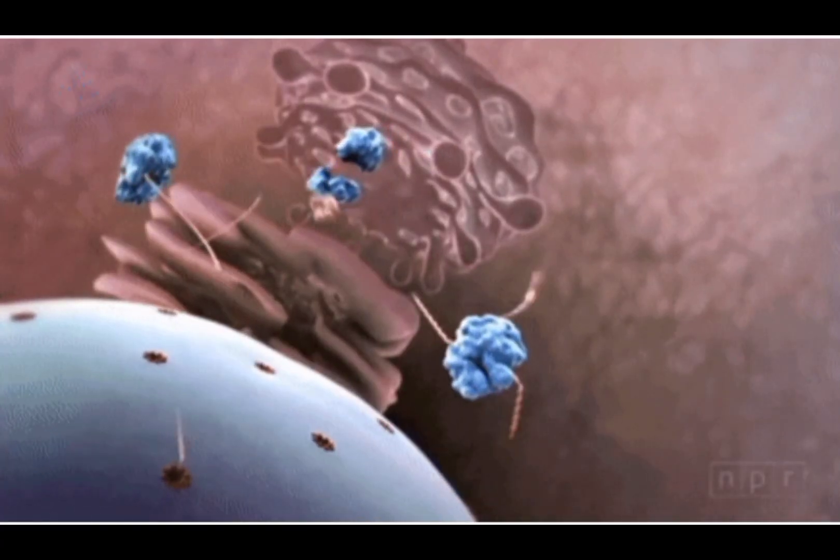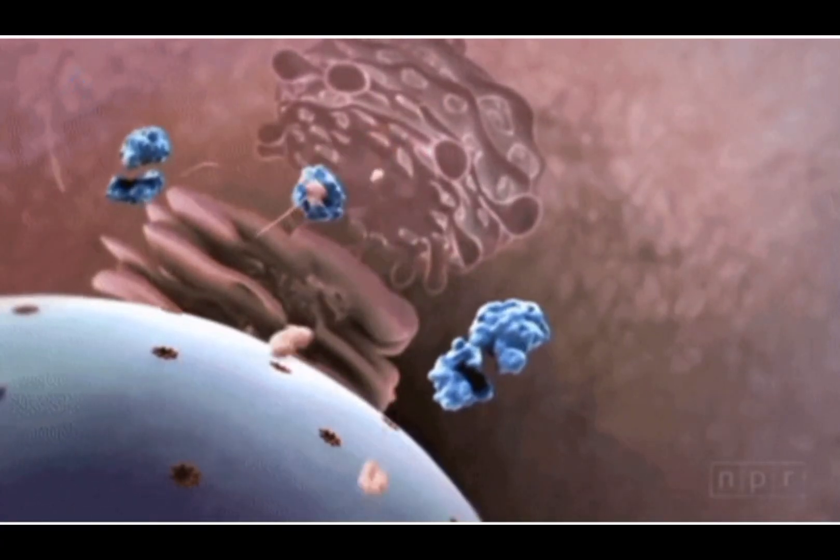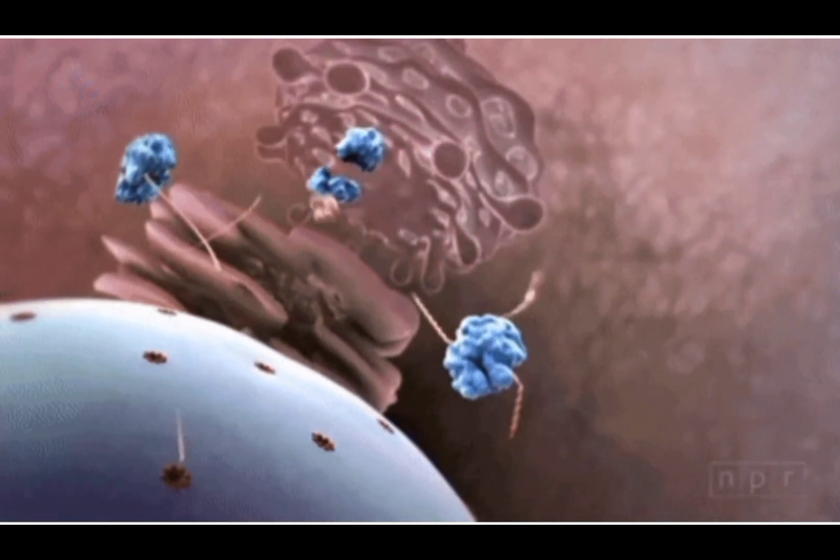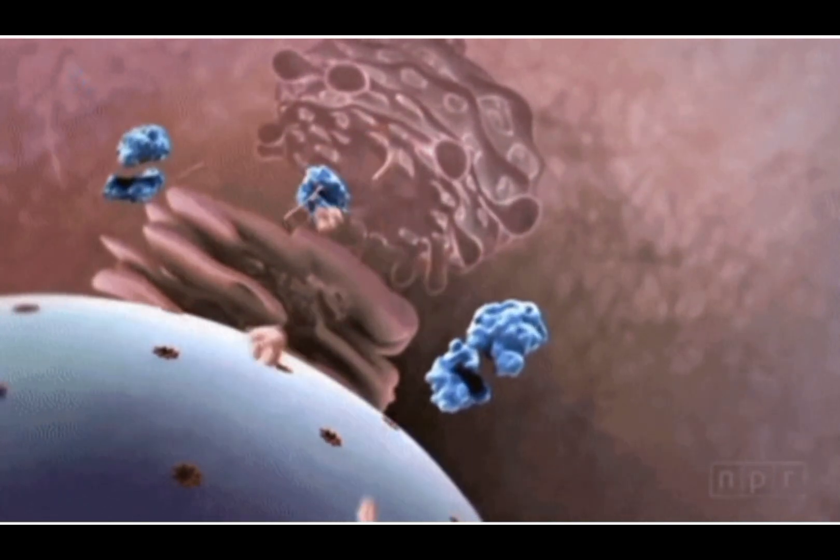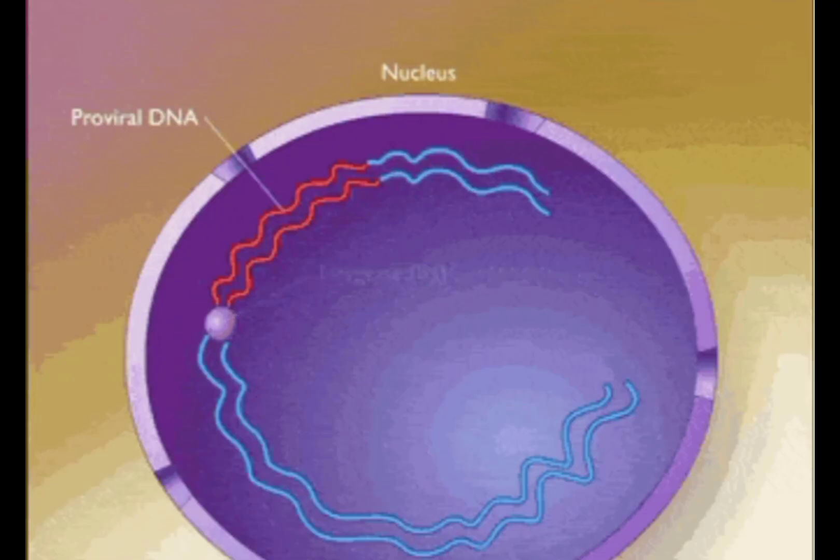Nucleolus. Within the nucleus is a spherical structure called nucleolus. There may be more than one nucleolus in one nucleus. Their number varies in different kinds of cells.